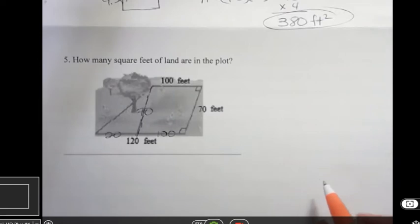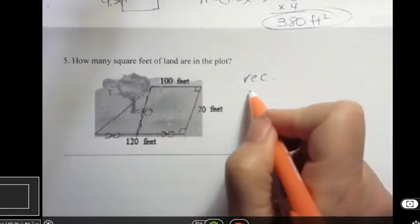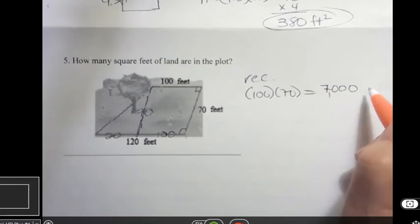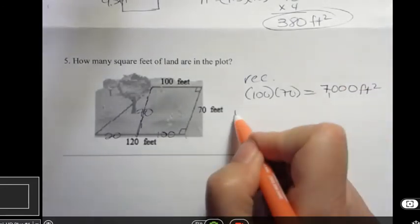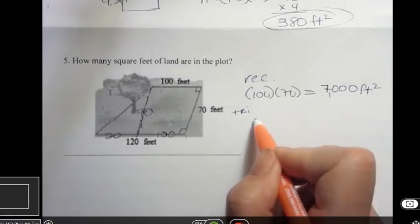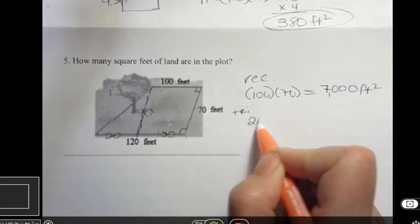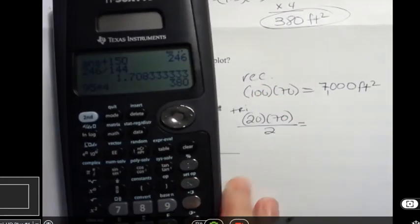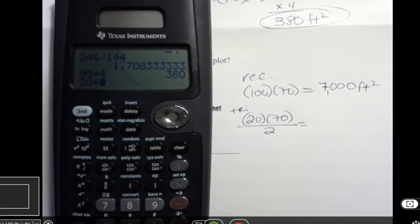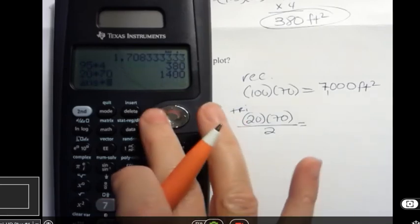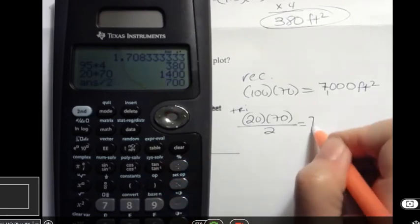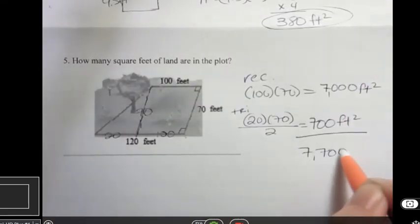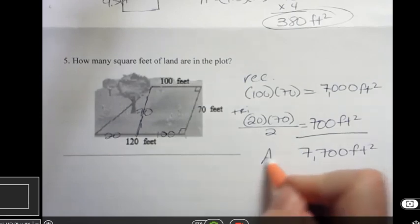So now we can find the area of the rectangle, and that is 100 times 70, which is seven with three zeros, or 7,000 square feet. And then we can find the area of the triangle, which is base times height divided by two. So we have a base of 20 and a height of 70, but we have to divide that by two. And that's going to be 700. You don't have to do that in your head. You can always do it on your calculator, and then divide by two. And that gives you 700 square feet. And so if I add those two parts together, I get 7,700 square feet. That's the area of that plot of land.